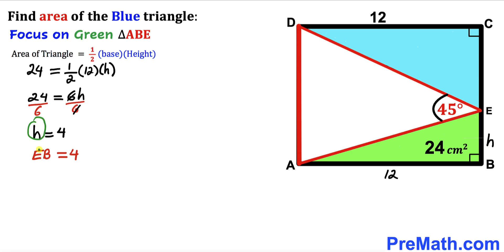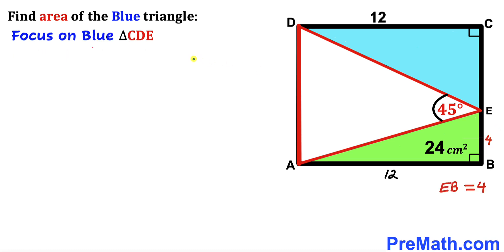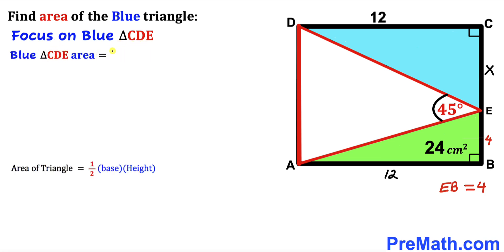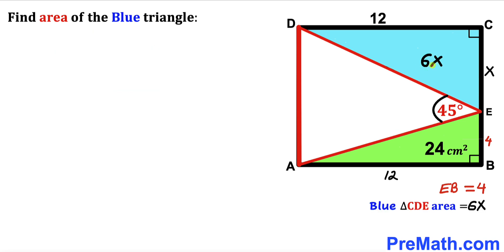Since height H is the EB length, EB turns out to be 4 centimeters. Now let's focus on the blue right triangle CDE. Let's assume its side length CE is X centimeters. Recalling the area formula — ½ × base × height — the area of blue triangle CDE is ½ × 12 × X, which simplifies to 6X.